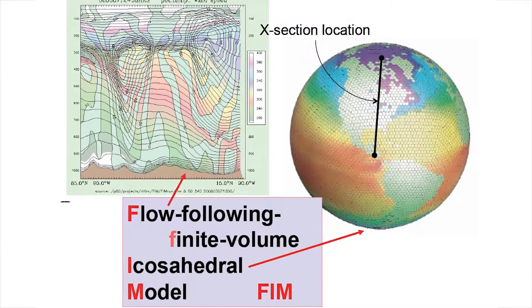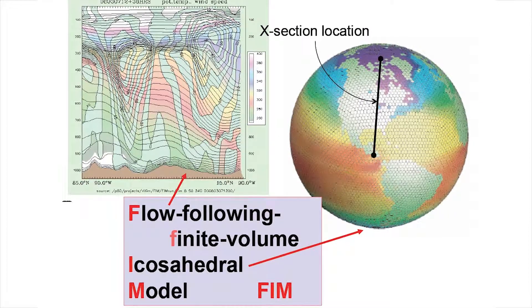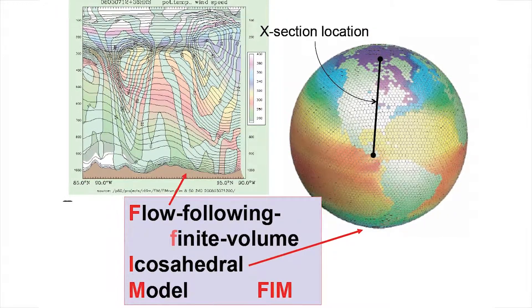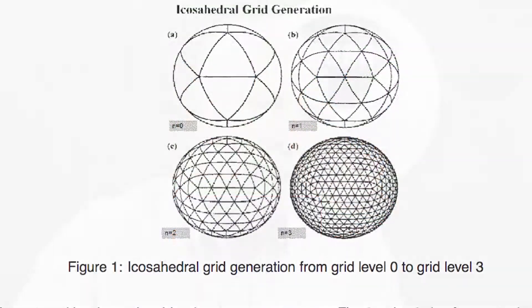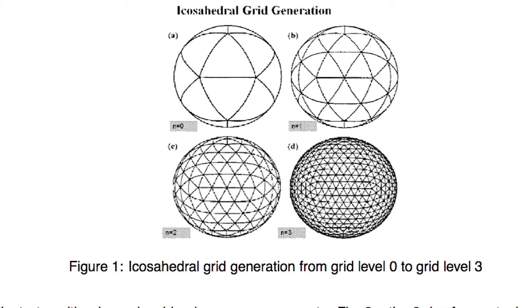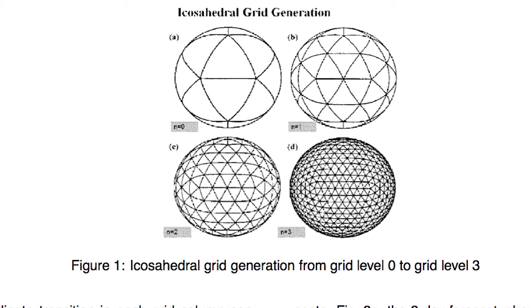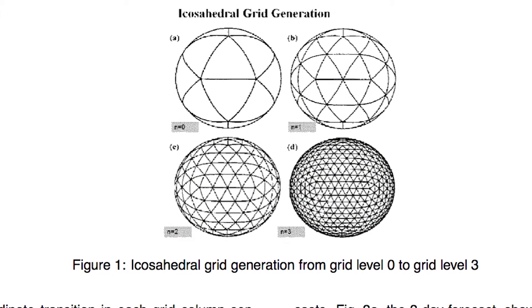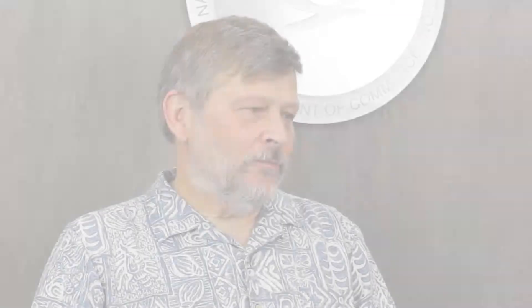FIMCAM is a meteorological model, a global model. It is on a soccer grid — we call it a soccer grid, or icosahedral. It's called soccer grid because it looks like a soccer ball.